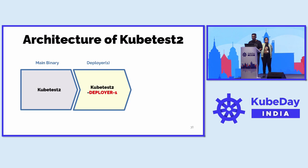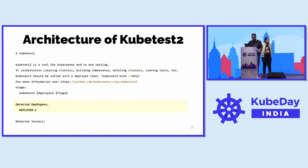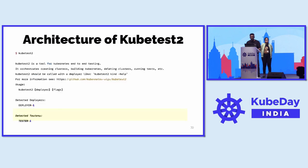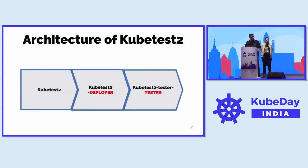The second leg is the deployer. kubetest2 is smart enough to notice if there's a file in the path named kubetest2-deployer1 — it recognizes it as a deployer and picks it up. Similarly, we have testers of various kinds with the naming convention kubetest2-tester slash whatever tester name. Once all three legs are present, kubetest2 comes and detects the deployer and the tester. That's the architecture in sum.